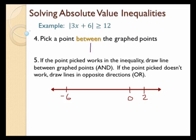I'll pick 1 in this case. It doesn't matter, but 0 and 1 are usually the easiest things to plug in if they fall between the two points. Step five: if the point picked works in the inequality, I'm going to take that 1 and plug it into the original inequality.